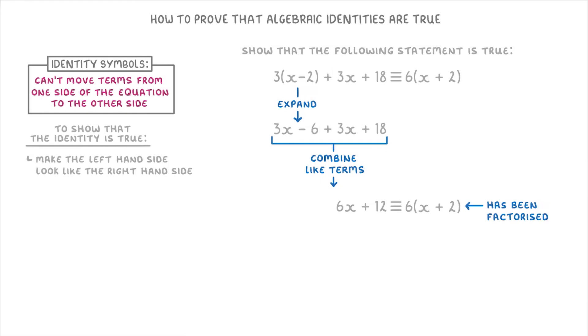So to make our left hand side the same, we need to factorise our 6x plus 12, which we can do by taking out the common factor of 6 and putting the other factors of x plus 2 in the brackets.